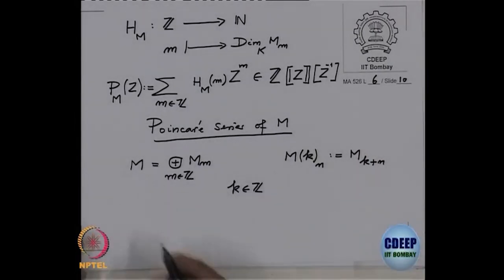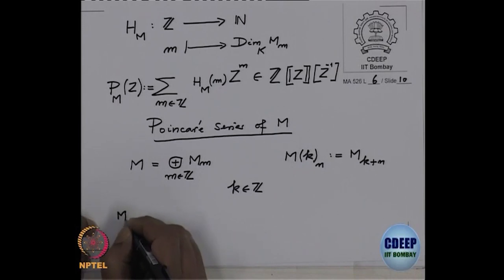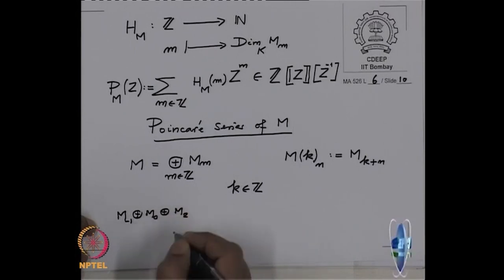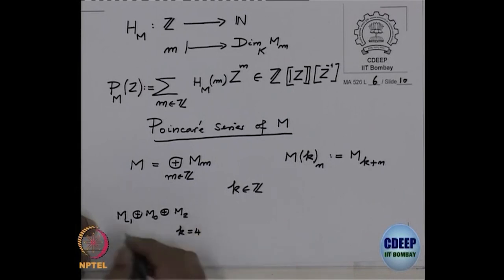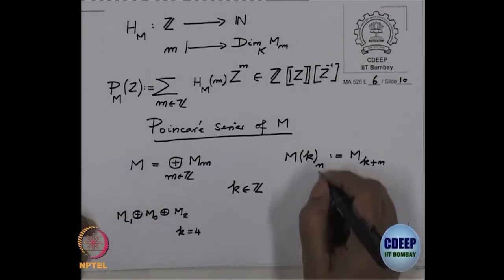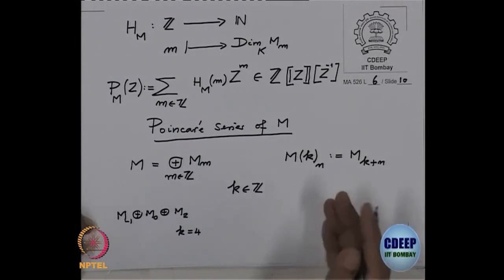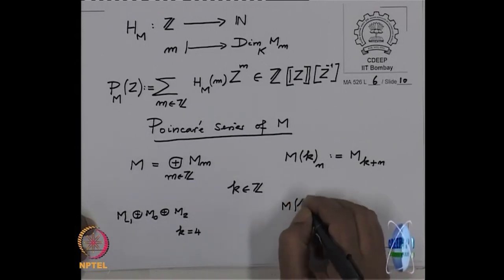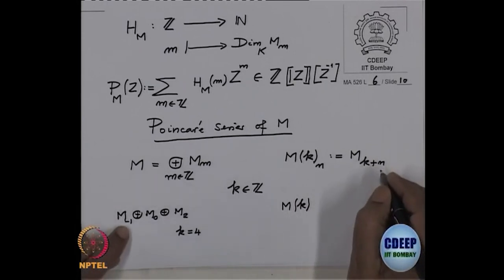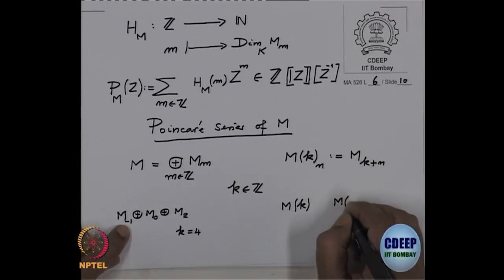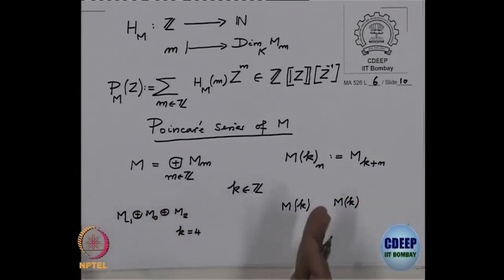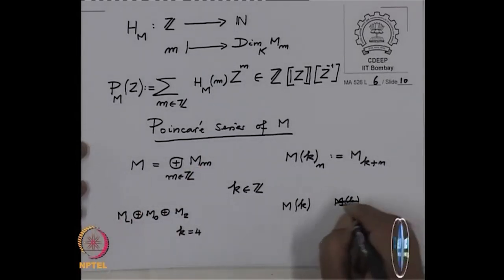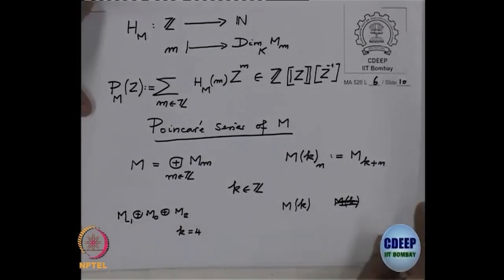If this module was like M_{-1} direct sum M_0 direct sum M_2, and K is 4, then this component, the new component will be shifted to this side. So K plus N. So this will become M_{-3}, only the position is changing. I don't write that, it's unnecessary to think about it. It's just positioning.